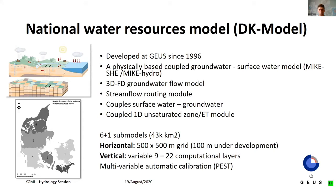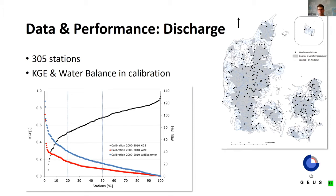We calibrate the model using a multi-variable approach, looking at discharge and groundwater heads. Just for completeness, here are the discharge results — we get reasonable performance for KGE and the water balance for the entire year and for summer conditions, based on 305 stations.